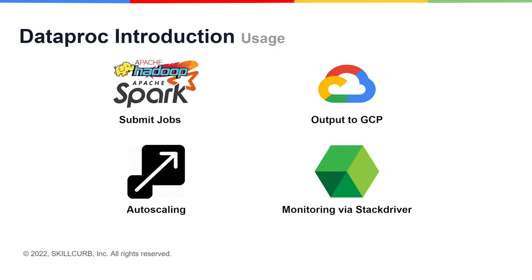The way Dataproc is used is as follows. You can submit Hadoop or Spark jobs the same way you would for any service associated with Hadoop or Spark — Dataproc is compatible and interoperable with both. If required, the cluster can be set up such that it auto-scales according to the job load it receives. The outputs you receive from Dataproc can very easily be pushed to GCP services like Cloud Storage, BigQuery, and Bigtable. Dataproc also integrates with Stackdriver, which you can use for logging and monitoring job performance and output.